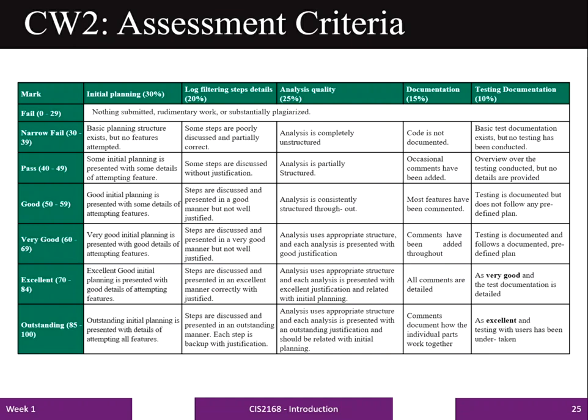This table presents the marking criteria for coursework 2. Initial planning carries 30% weightage, log filtering 20%, analysis quality 25%, documentation 15%, and testing document 10%. The first column also presents the range and grade for coursework 2.